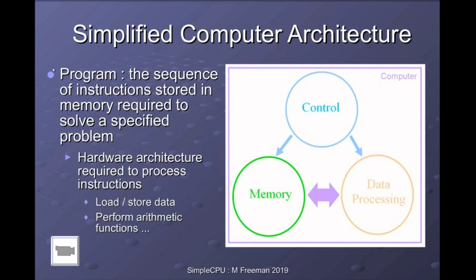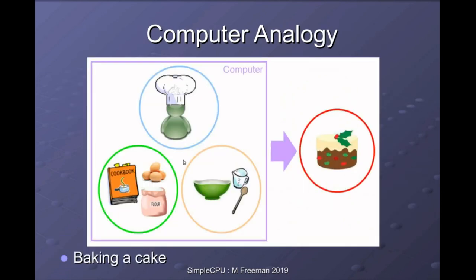Any computer can be broken down into this block diagram. You have some data processing elements that access data from memory, and you have a control element that synchronizes operations, updates memory, and selects the data processing elements. To illustrate this, I always use the chef analogy: the chef is your control system, the cookbook and the larder are your memory, and the bowl and spoon are your data processing elements. The chef's task is to follow the instructions in the cookbook to produce a cake — to solve a problem.